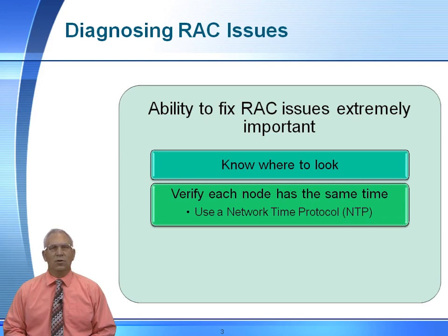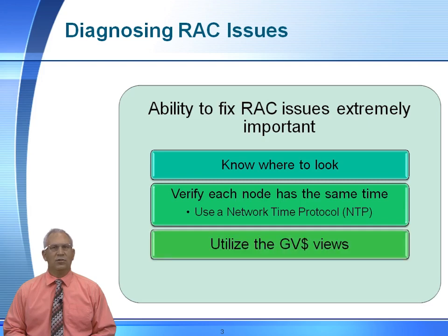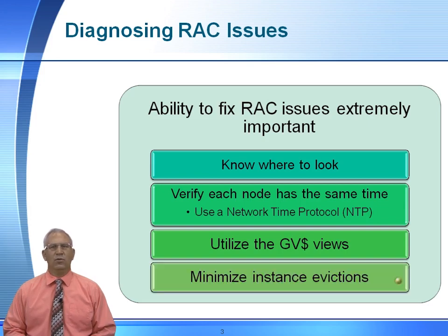We need to know where to look to find the trace files and log files, as well as using the network time protocol. It's not a requirement to use the network time protocol — it is just highly recommended. And then ultimately, we are going to take a look at the GV dollar views. The point here is that we want to minimize node eviction. A node eviction basically means that the voting disk was not able to find a specific Rack component on that specific server.